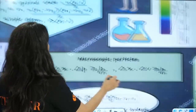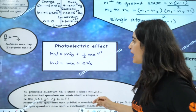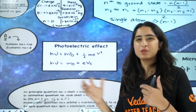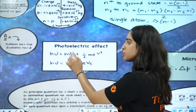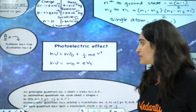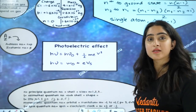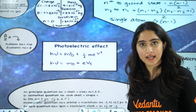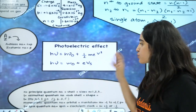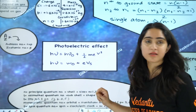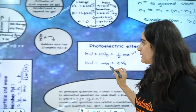Before quantum mechanics, what is the photoelectric effect? The equation is: hν = hν₀ (work function, where ν₀ is the threshold frequency) plus ½mv², where m is the mass of the electron and v is the velocity — this corresponds to kinetic energy. If you want to stop the electron from coming out of the metal, we apply the stopping potential Vs, so eVs equals the kinetic energy, where e is the charge of the electron.